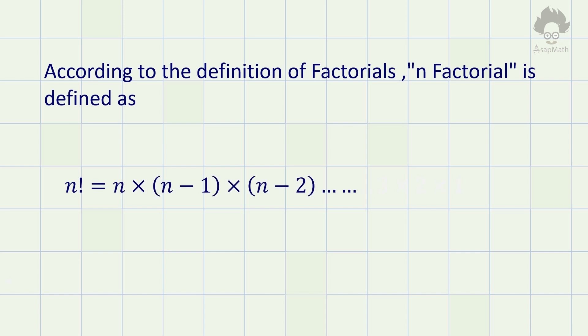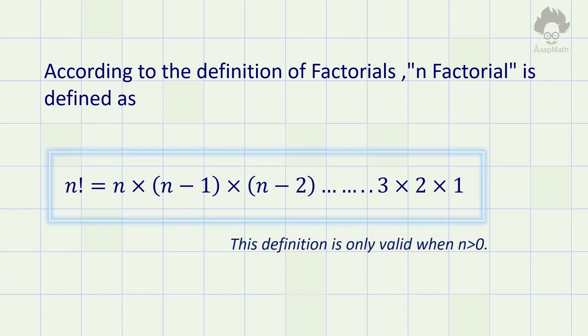According to the definition, factorial n is defined as the product of all integers up to n starting from 1. But this definition is valid only when n is greater than 0. So we need to come up with another way to find the factorial of 0.